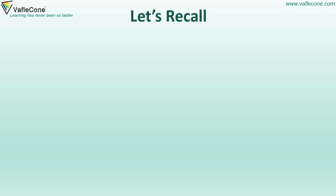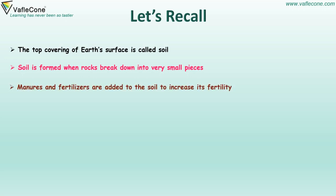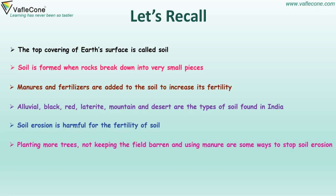Let's recall. The top covering of earth's surface is called soil. Soil is formed when rocks break down into very small pieces. Manures and fertilizers are added to the soil to increase its fertility. Alluvial, black, red, laterite, mountain and desert are the types of soil found in India. Soil erosion is harmful for fertility. Planting more trees, not keeping the field barren and using manure are some ways to stop soil erosion.